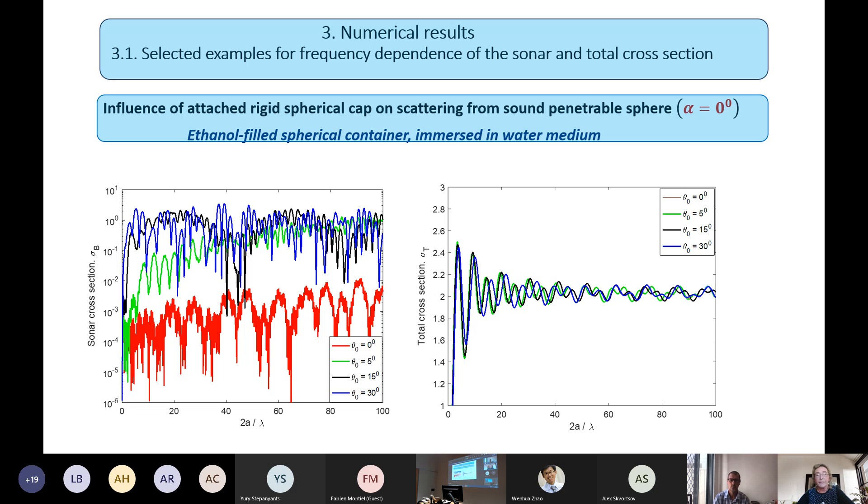Numerical results: we are considering penetrable sphere with spherical cap attached. Attachment of spherical cap leads to essential growth of backscattering. Sonar cross-section here in logarithmic scale, and diameter of the sphere ranging from nearly zero wavelength to 100 wavelengths. In red, no spherical cap, just sphere, and then here we see the spherical cap is increasing in size from 5 to 30 degrees, and the backscattering is increasing for ethanol sphere here. And here is total cross-section.